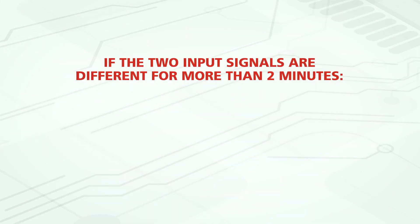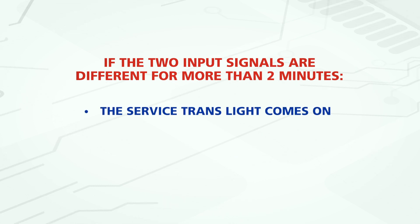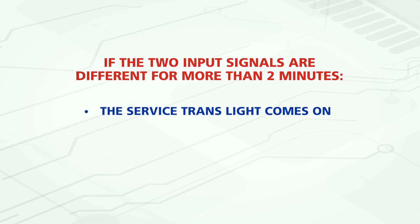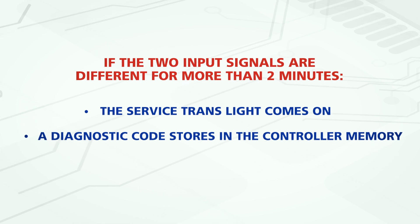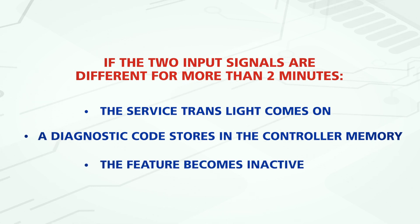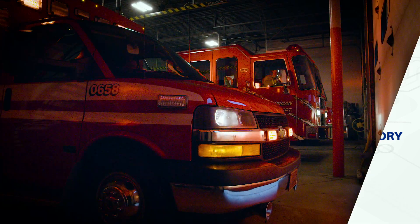If the two input signals are different for more than two minutes, the service trans light comes on, a diagnostic code stores in the controller memory, and the feature becomes inactive.